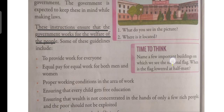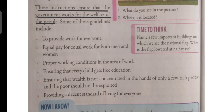These guidelines are to provide work for everyone; equal pay for equal work for both men and women; proper working conditions in the area of work; ensuring that every child gets free education; ensuring that wealth is not concentrated in the hands of only a few rich people; and the poor should not be exploited, providing a decent standard of living for everyone. So these are certain policies or guidelines which the government should keep in mind while making laws.